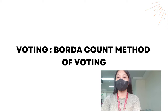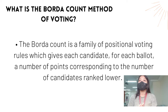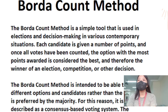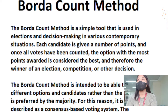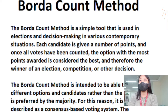What is the Borda Count Method of Voting? The Borda Count is a family of positional voting rules which gives each candidate, for each ballot, a number of points corresponding to the number of candidates ranked lower. This method is a simple tool used in elections and decision-making. Each candidate is given a number of points, and overall, once all ballots have been counted, the option with the most points is considered the winner of an election, competition, or other decision. The Borda Count Method is intended to choose different options and candidates rather than the option preferred by the majority. For this reason, it is also described as a consensus-based voting system.